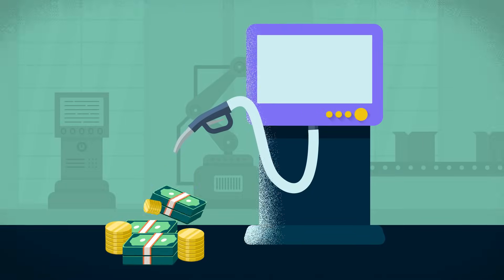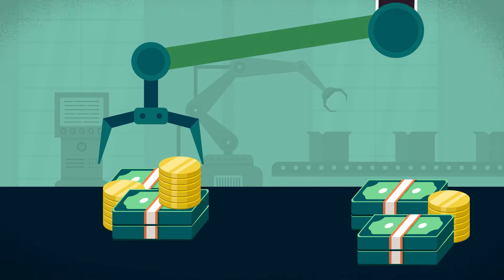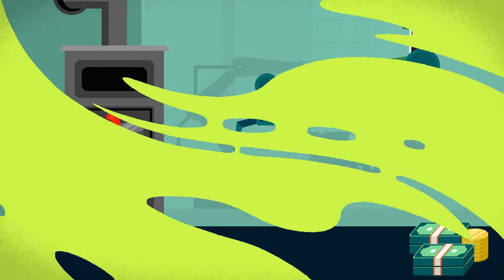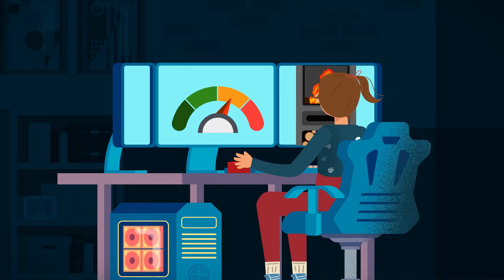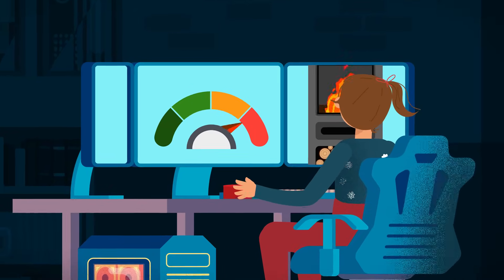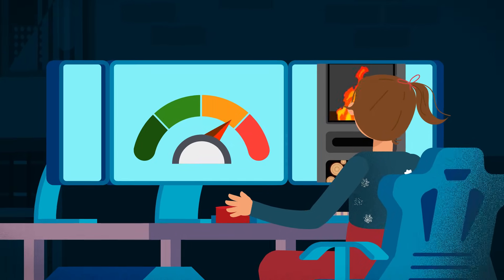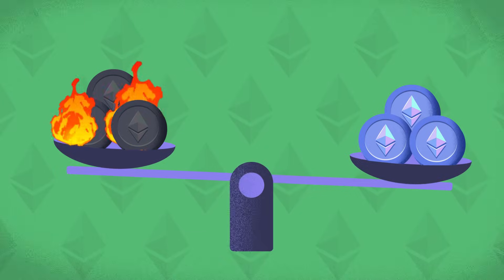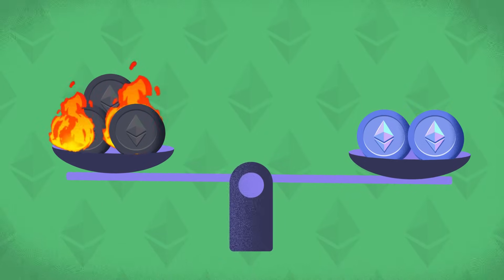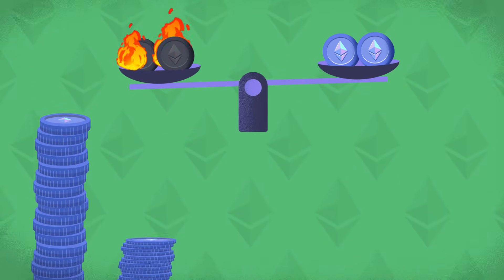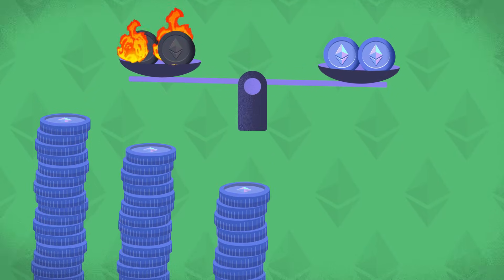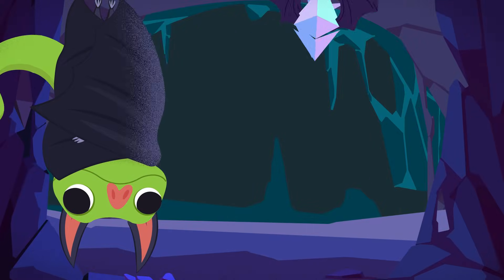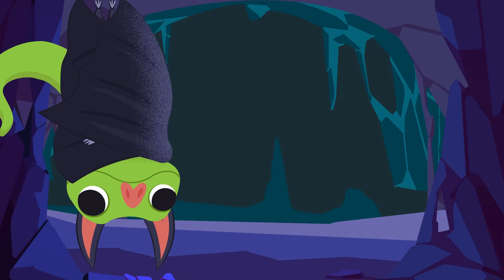Finally, on Ethereum, a portion of the gas fee you pay is burnt, which permanently removes it from circulation. This has multiple purposes: it creates a system that prevents manipulation of the fee markets by block producers, and destroying ETH also helps offset ETH issuance, keeping it at a sustainable rate. If demand is high, ETH could become deflationary as more ETH is burnt than created. This is why proponents of Ethereum often refer to ETH as ultrasound money.